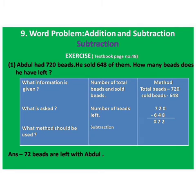Today we will solve the exercise of subtraction from textbook page number 48. Number 1: Abdul had 720 beads. He sold 648 of them. How many beads does he have left?